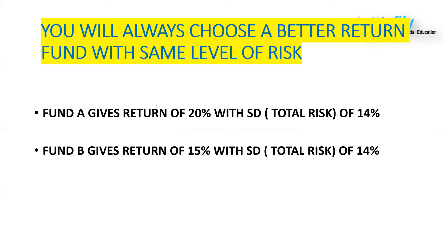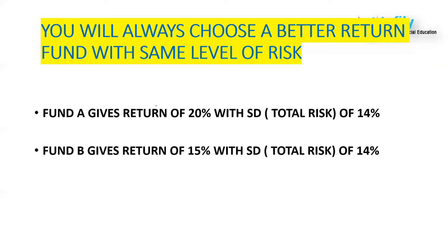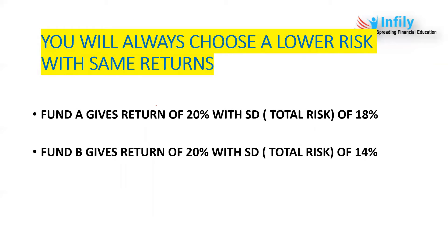You will always choose a better return fund with the same level of risk. Standard deviation is a measure of total risk of a portfolio. For example, Fund A gives a return of 20% with a standard deviation of 14%, and Fund B gives a return of 15% with a standard deviation of 14%. Both have the same risk, but Fund A gives more return — so you would go for Fund A. The risk-adjusted performance of Fund A is better.